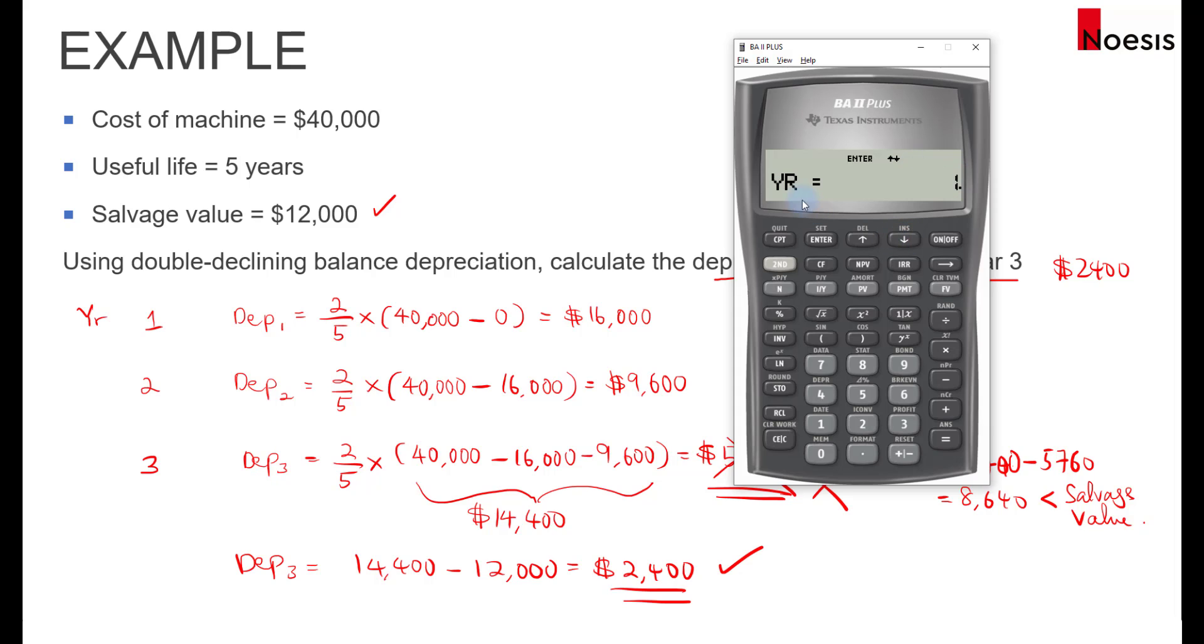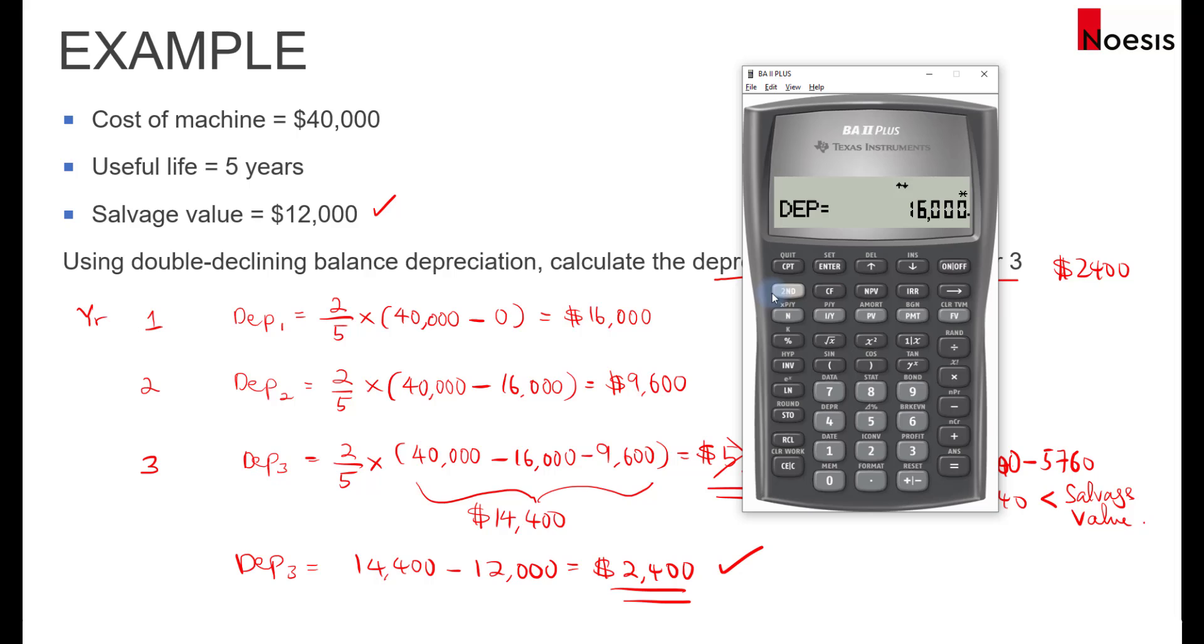And then we have the year, which year are we trying to compute for. So if I leave this as one, when I scroll down, the calculator will compute the depreciation expense for the first year, which is 16,000. If I scroll down, I will see RBV, which is the remaining book value. In other words, if I take 40,000 minus 16,000, that is $24,000. And the RDV is the remaining depreciable value, so we have another 12,000 to depreciate.